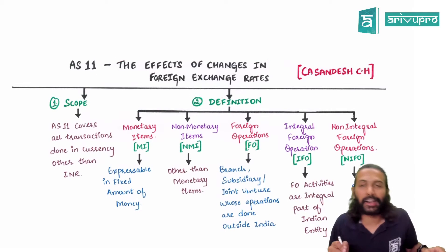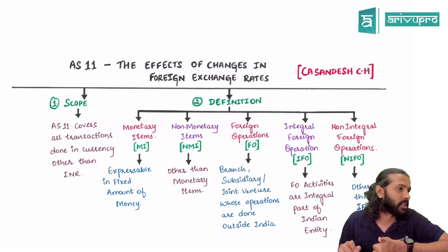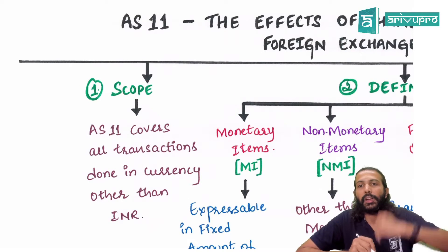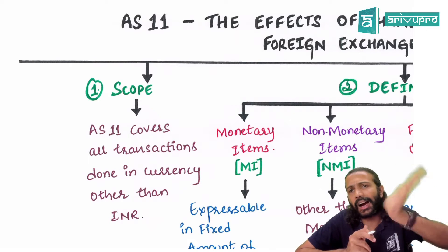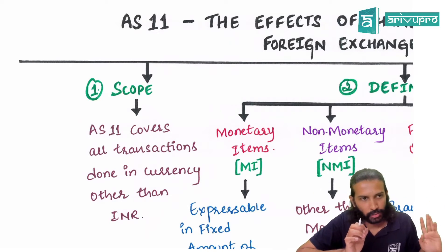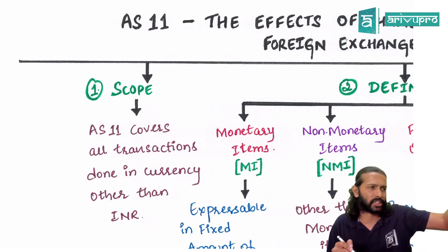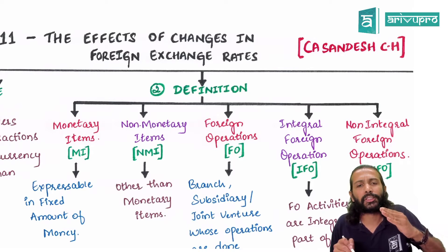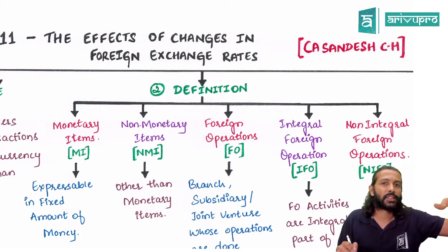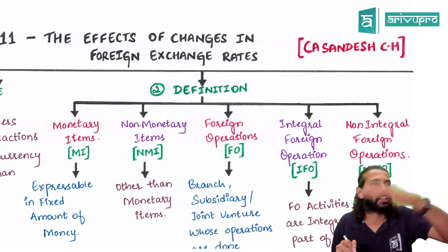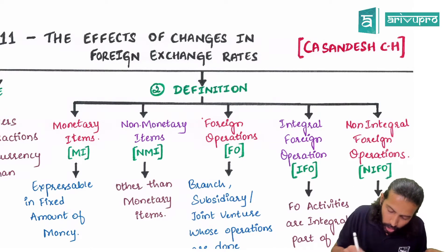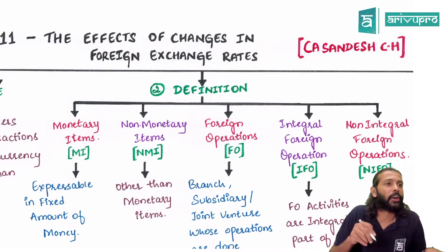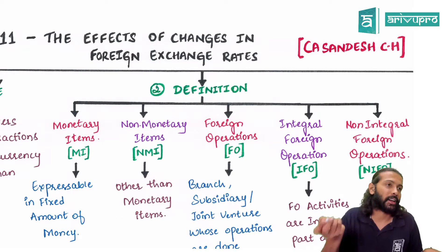Let's quickly revise Accounting Standard 11 — the effects of changes in foreign exchange rates — with the help of charts. First, the scope: this standard covers all transactions done in a currency other than Indian rupees. Two key definitions: monetary items are those whose value is fixed and can be expressed in a fixed denomination of currency. Non-monetary items are those whose value fluctuates; the standard defines them simply as items other than monetary items.